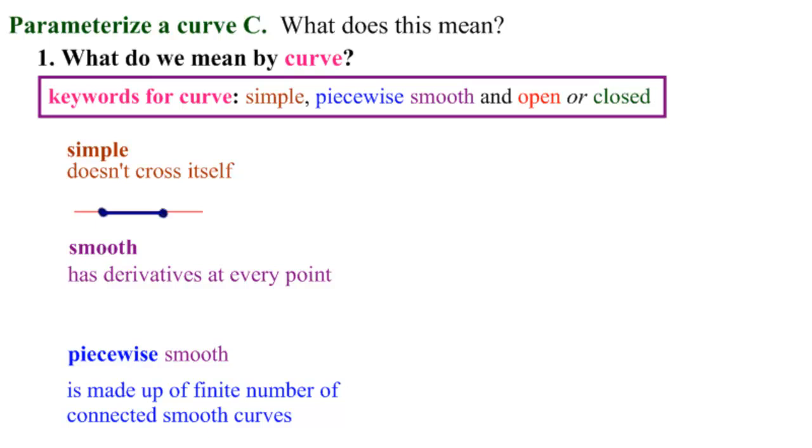In 2D, where we're most familiar with working, it would mean that we have a curve. It can turn around like that. That's okay, but it cannot turn around and cross itself. This is not okay. This is not a simple curve.